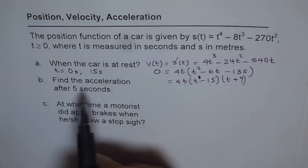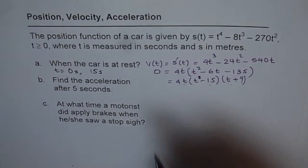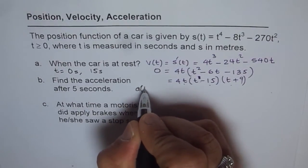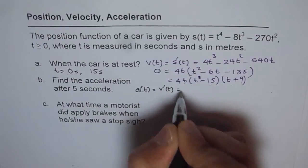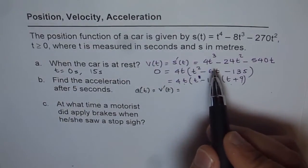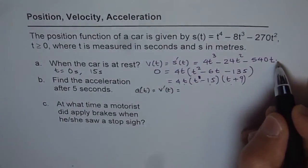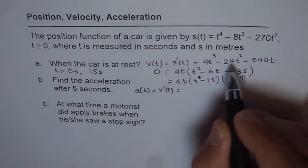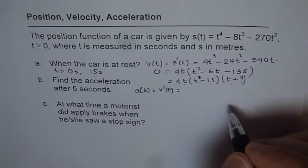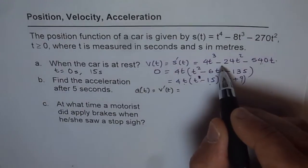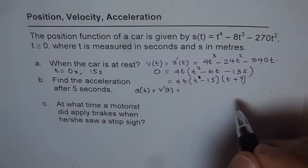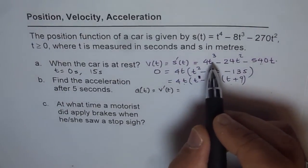The second part is to find the acceleration after 5 seconds. Acceleration is the derivative of velocity, so a(t) = v'(t). It is easier to apply the power rule directly from the expanded velocity equation v(t) = 4t³ - 24t² - 540t, rather than the factored form.